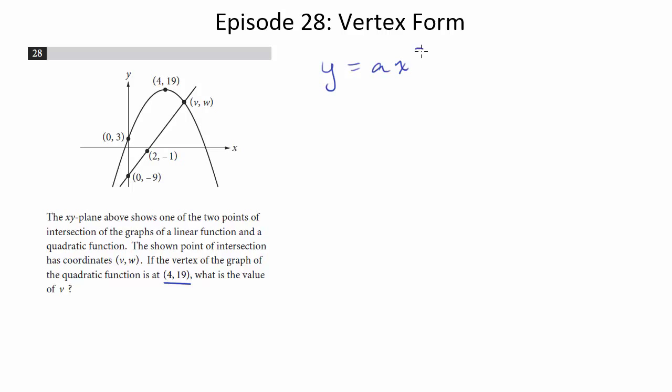You know the standard form is y equals ax squared plus bx plus c, and that's pretty much useful in every other question type when you're dealing with quadratics. But here we need the vertex form, which looks something like this: y equals a times (x minus h) squared plus k.